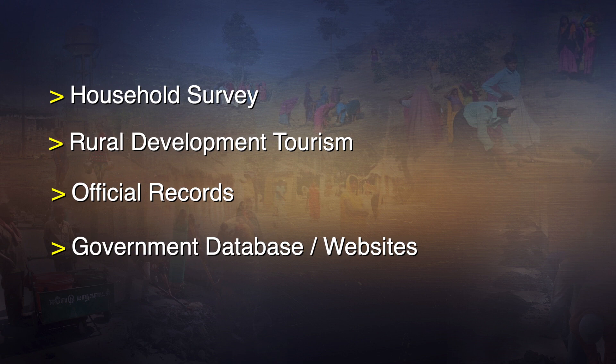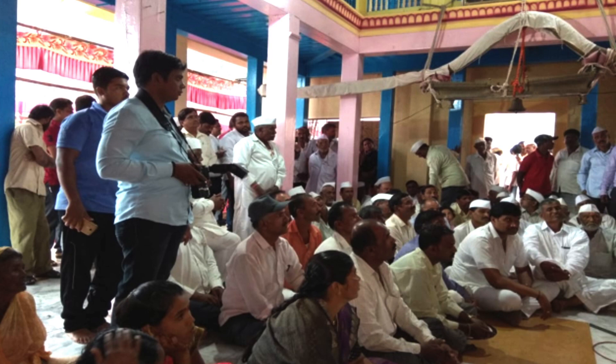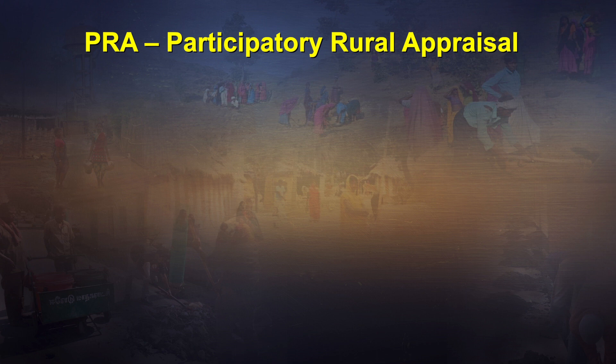In all these, there are limitations. In door-to-door survey, it takes a long time to collect data and write the report before you can lay down a plan. Official records and websites — you do not know how dynamic they are. And they are all extractive in nature. When you go for a door-to-door survey or official records, they are not suitable for participatory assessment of situations and conditions in the village. So what we advocate is that it is good to go for PRA — Participatory Rural Appraisal.